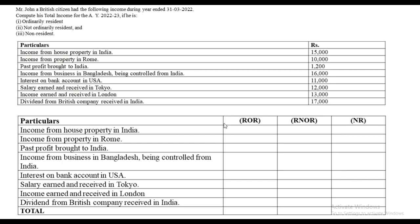If it is Indian income, everyone pays. Controlled from India, first two people. Foreign income, first person. Agriculture income in India, no one pays tax. Past untaxed profit, no one pays tax. First item: income from house property in India. Since it is in India, everyone will pay tax. The amount is 15,000, so 15,000 will appear in all three columns. That simple it is.